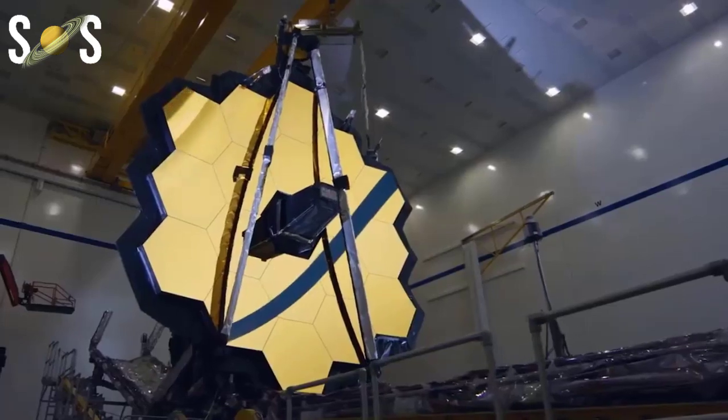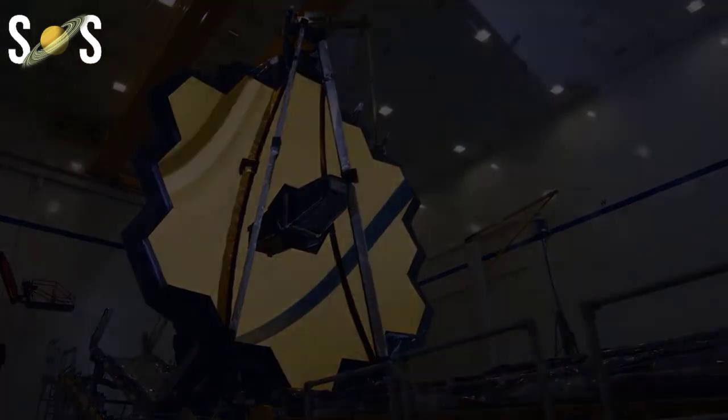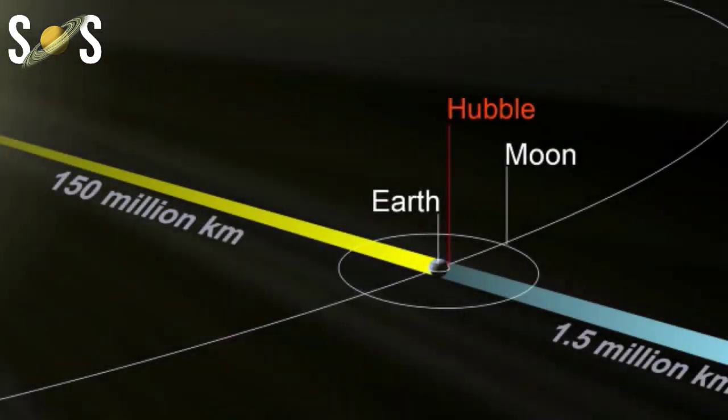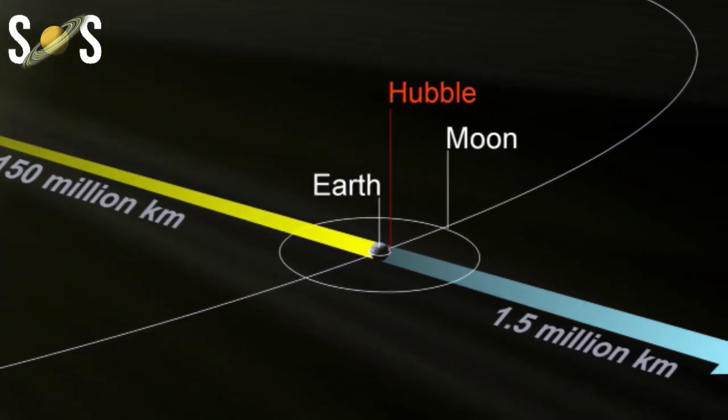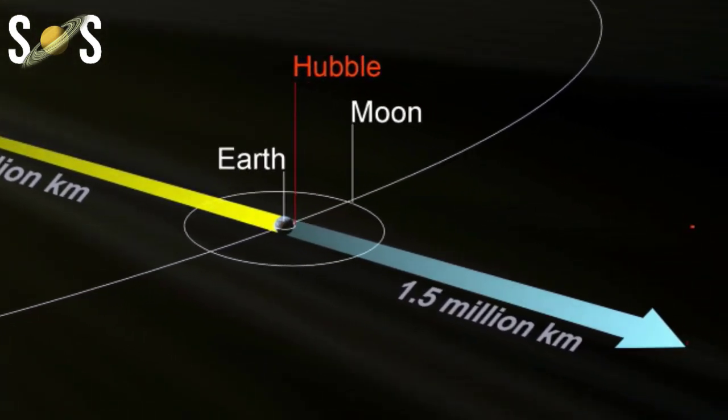How long will it take the JWST to get to the second Lagrange point? The James Webb Space Telescope will take 29 days to reach the second Lagrange point. After that, it will be in a stable orbit around the Sun alongside Earth.